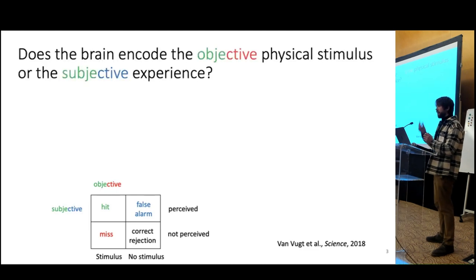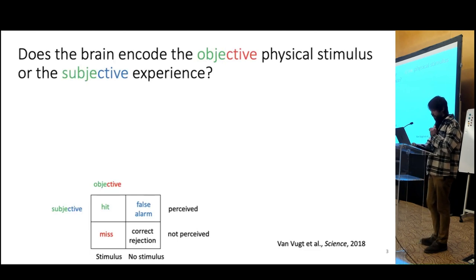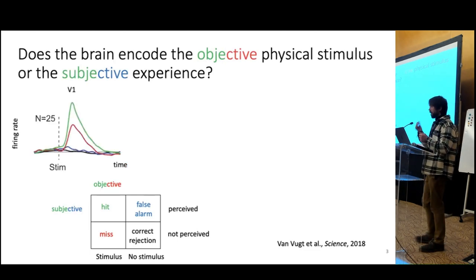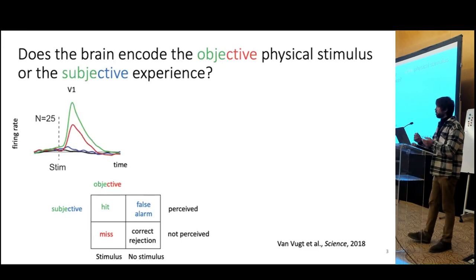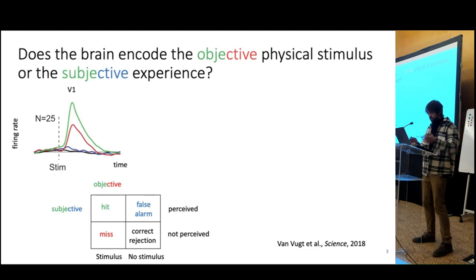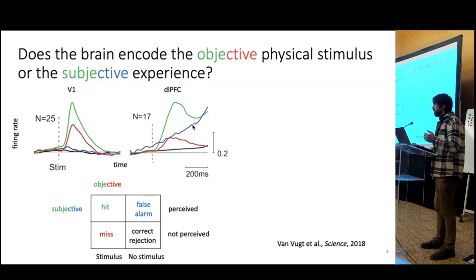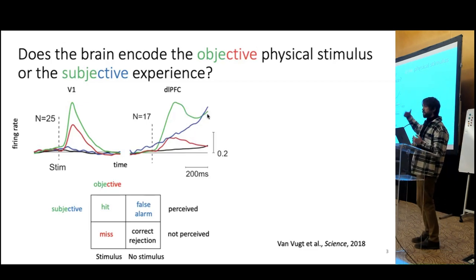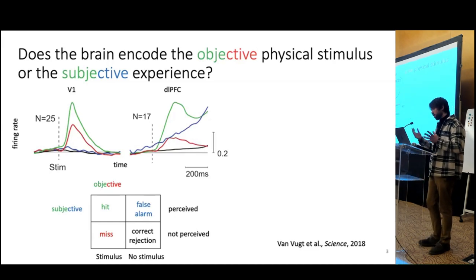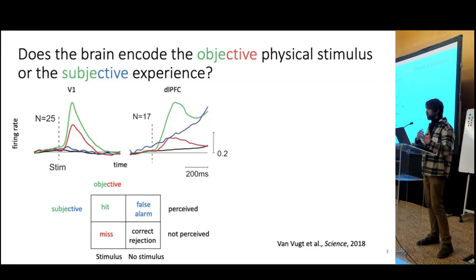One question they were interested in is: if you put electrodes recording in the brain, is the neural activity going to represent objective physical reality — high activity if there was a stimulus, low otherwise? Or is it going to reflect subjective perception — high activity when the monkey perceives the stimulus regardless of whether it was there? When the electrode is placed in V1, you see high activity for both hit and miss trials, reflecting objective reality. But moving the electrode up toward prefrontal cortex, after a couple of hundred milliseconds, you get high activity whenever the monkey perceived the stimulus regardless of whether it was really there.